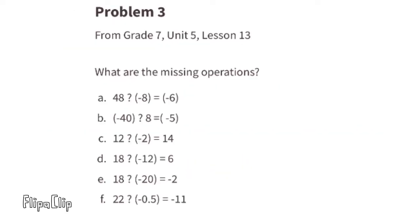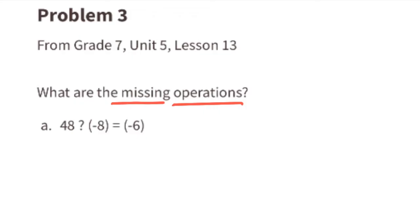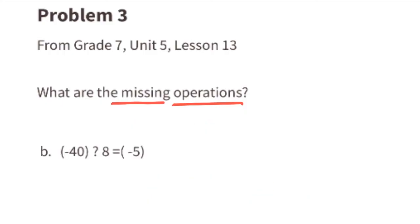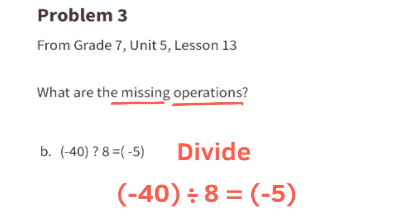Problem Number 3, from seventh grade Unit 5, Lesson 13: What are the missing operations? Part a: what operation can we substitute for the question mark to make this true? A division sign, because 48 divided by negative 8 equals negative 6. Part b: what operation can we substitute to make this true? Another division sign, because negative 40 divided by positive 8 equals negative 5.